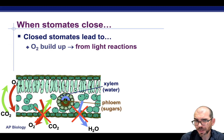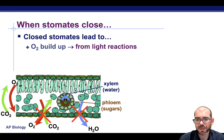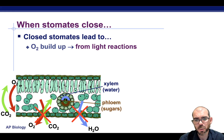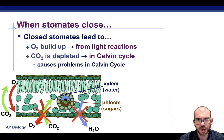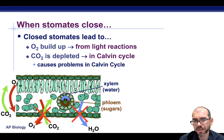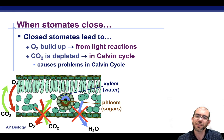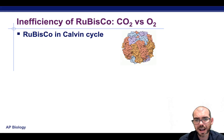When those stomates close, you are effectively shutting down the movement of water and gases. That's going to build up oxygen inside the leaf from the light reactions — as those reactions occur, oxygen is released as a waste product and now has nowhere else to go. That's also going to deplete the CO2 inside the leaf, which the plant needs for carbon fixation in the Calvin cycle.